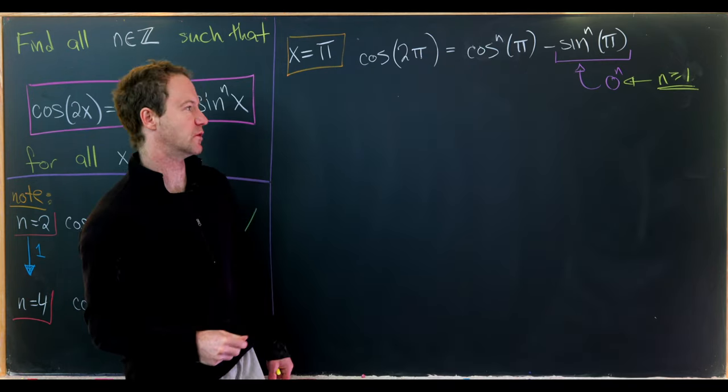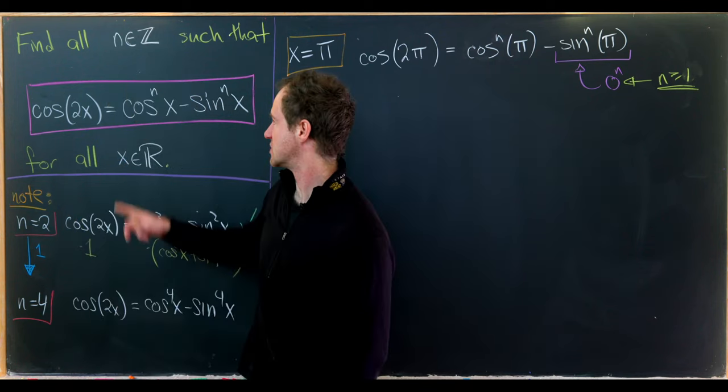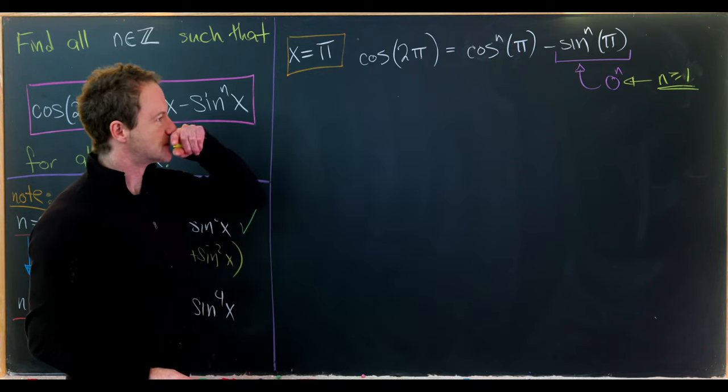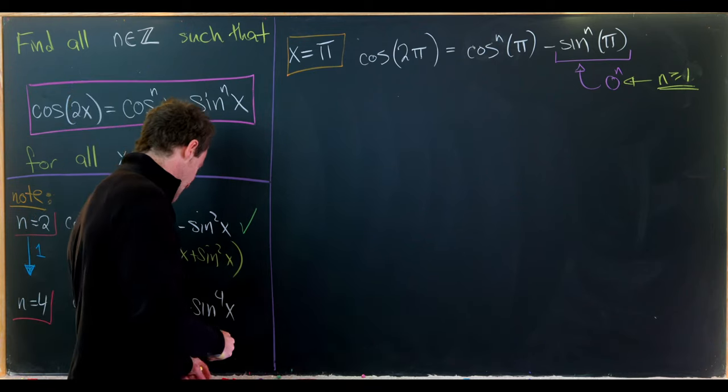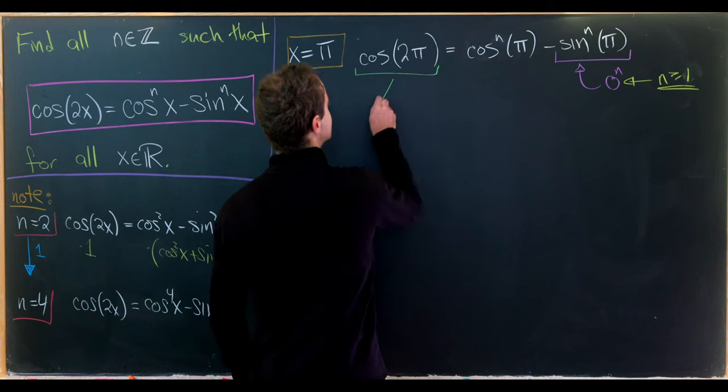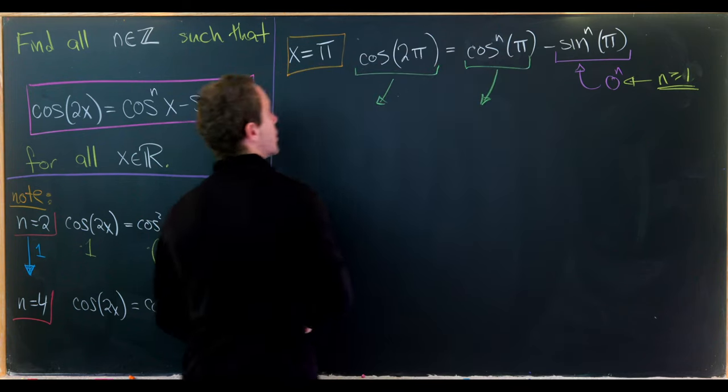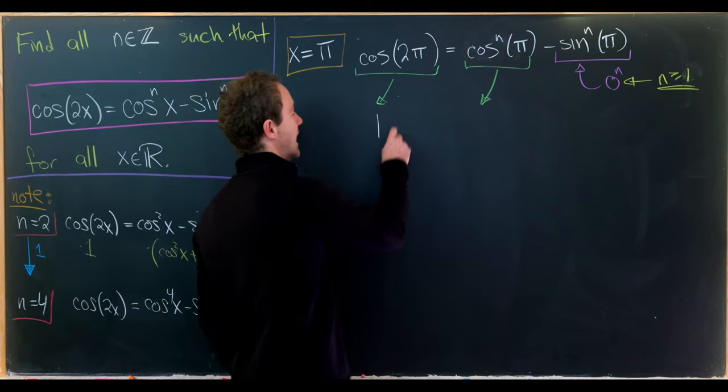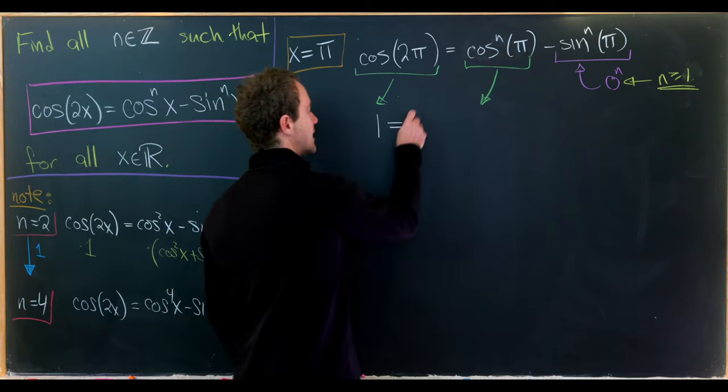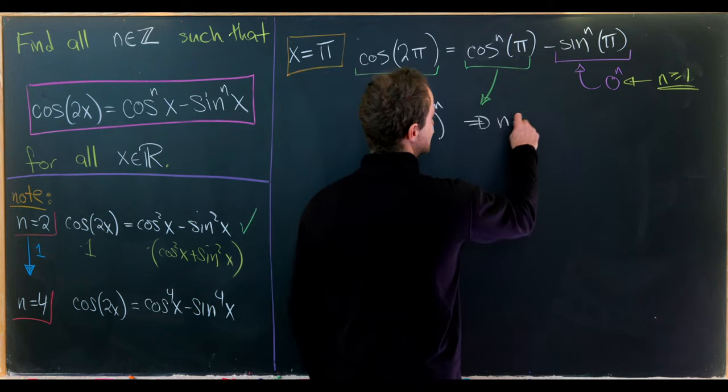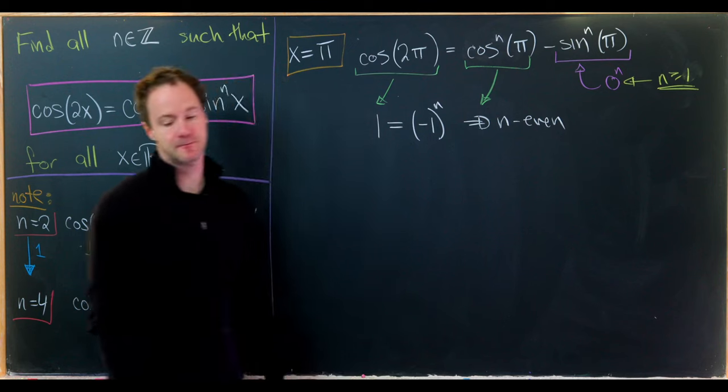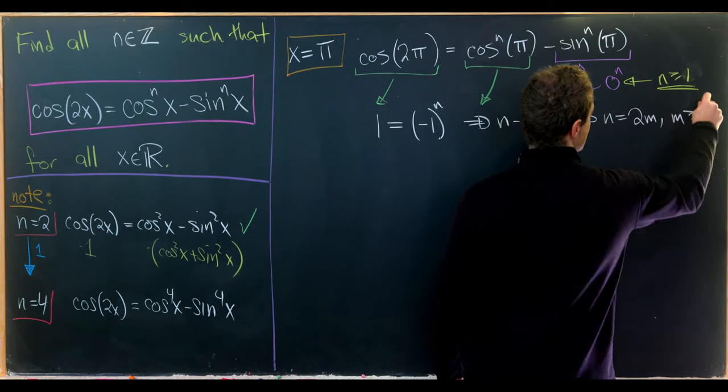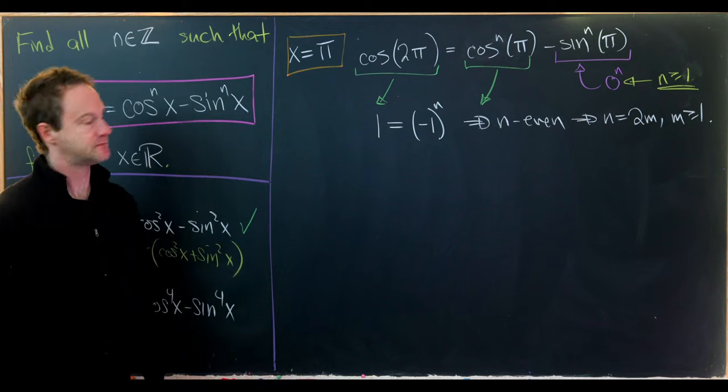Anyway, we know that n has to be positive. Now let's see what happens to the rest of this equation. Cosine of 2π equals 1, and cosine of π is negative 1. So we have 1 equals negative 1 to the nth power, which means n is in fact an even number. If n is even we can rewrite n as 2 times m where m is an integer bigger than or equal to 1.